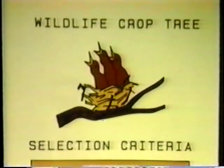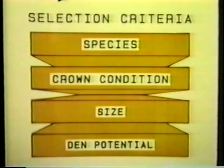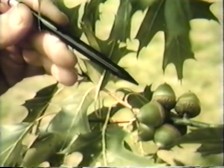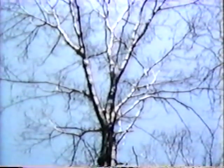For wildlife crop tree selection criteria, species is a primary consideration along with crown condition, size or diameter of the tree, and den potential. Favor species which produce mast or food for wildlife, such as white oak. Acorns produced by oak trees are an example of hard mast; fruits of the black cherry tree are an example of soft mast. Crop trees selected to produce mast should have a minimum diameter of 10 inches, since that's the size at which most start bearing good crops, and they should also have large, healthy crowns.